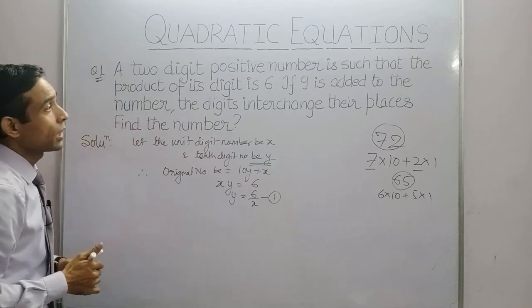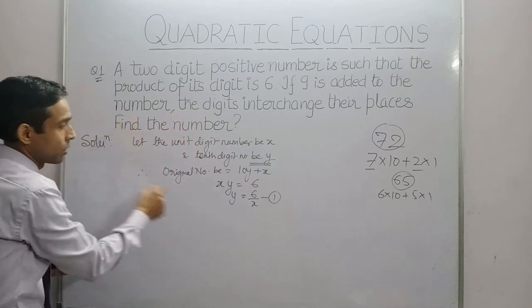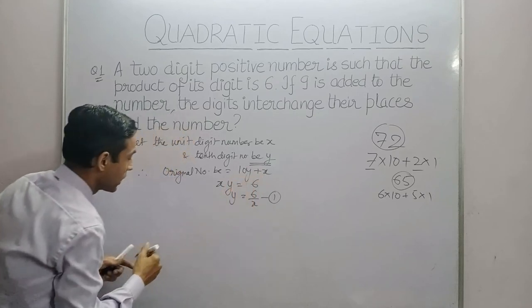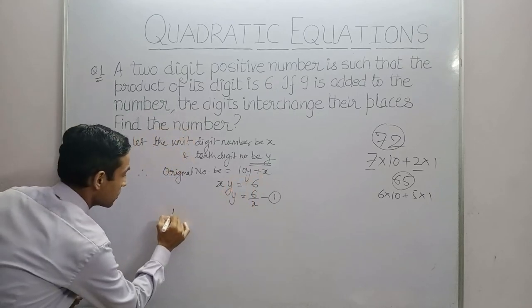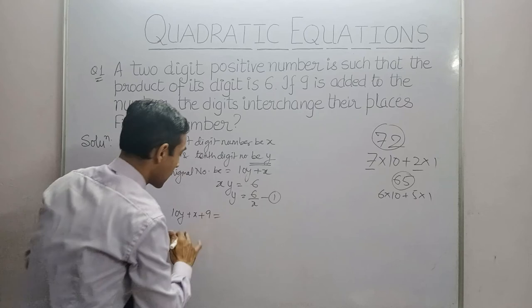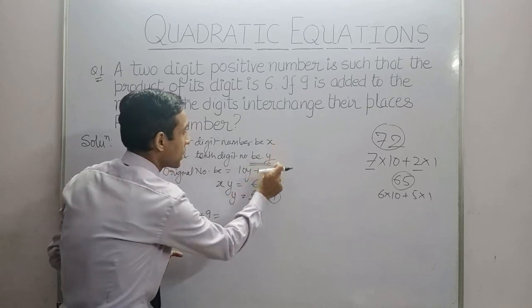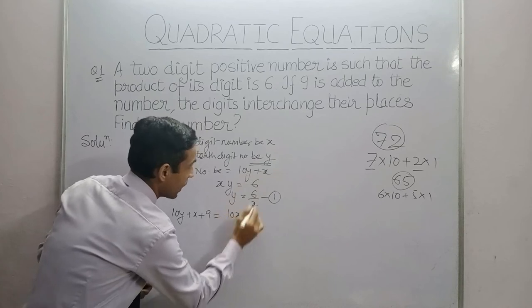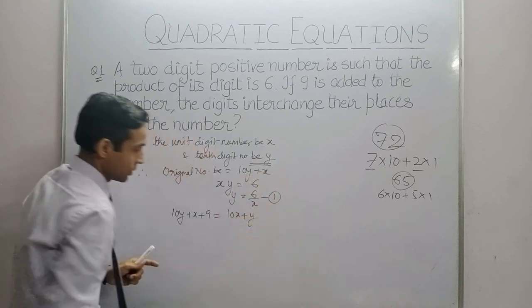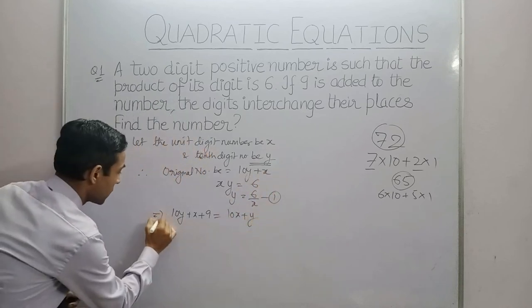Now, second condition they say if 9 is added to the number. If 9 is added to 10y + x, the digits interchange. So that means the unit digit becomes the tens digit and the tens digit becomes the unit digit. So we get 10y + x + 9 = 10x + y.